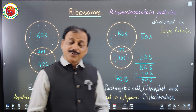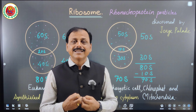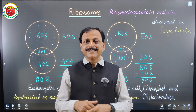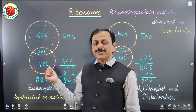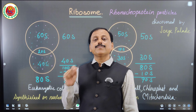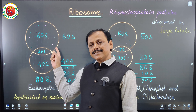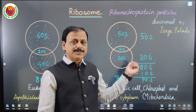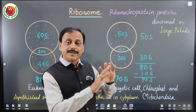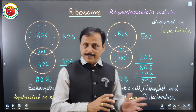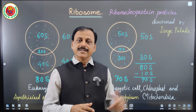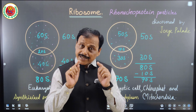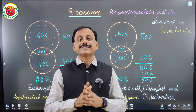Do these ribosome subunits exist together all the time? No. In eukaryotic cells, ribosomes are present in the cell cytoplasm as well as on the wall of the endoplasmic reticulum, where the larger subunit remains attached. In prokaryotic cells, both subunits remain separated in the cytoplasm, as well as in the mitochondrial matrix and stroma of the chloroplast.